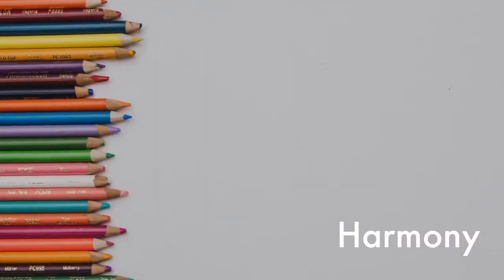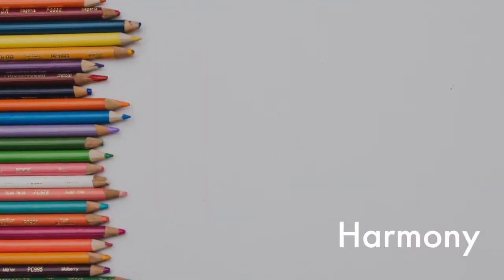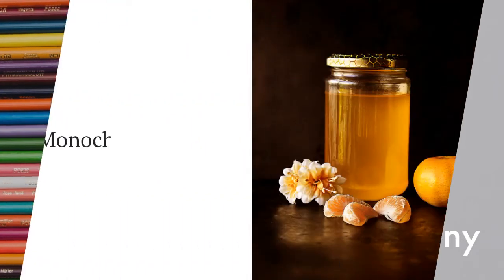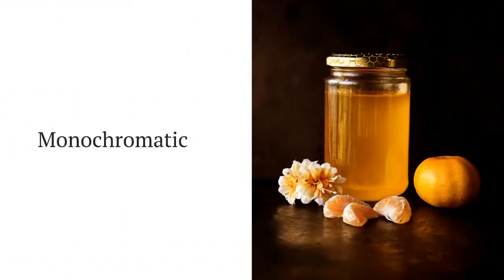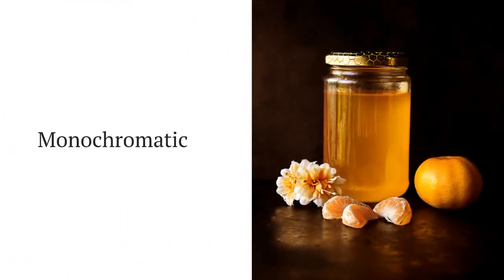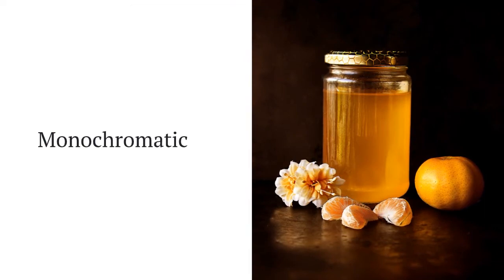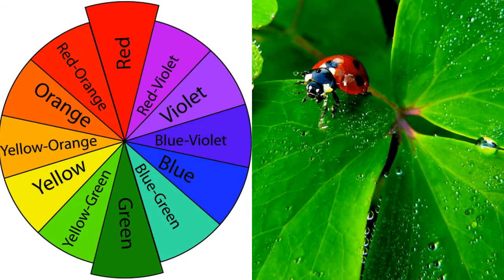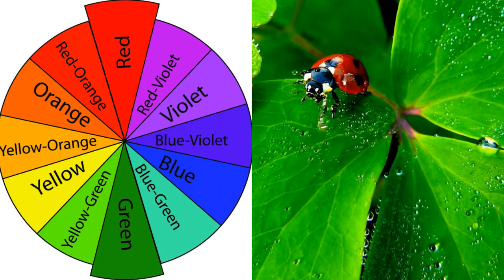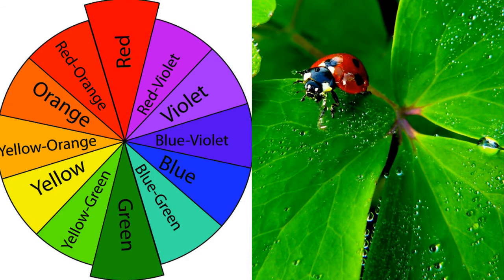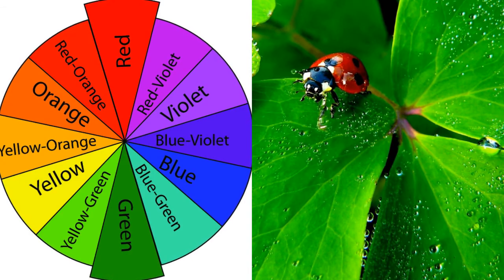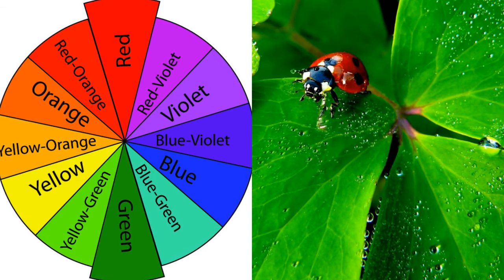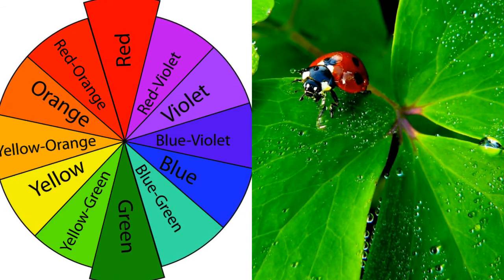Finally, we can use colors harmoniously. Monochromatic colors use variations of one particular color. Complementary colors use two colors opposite each other in a color wheel.